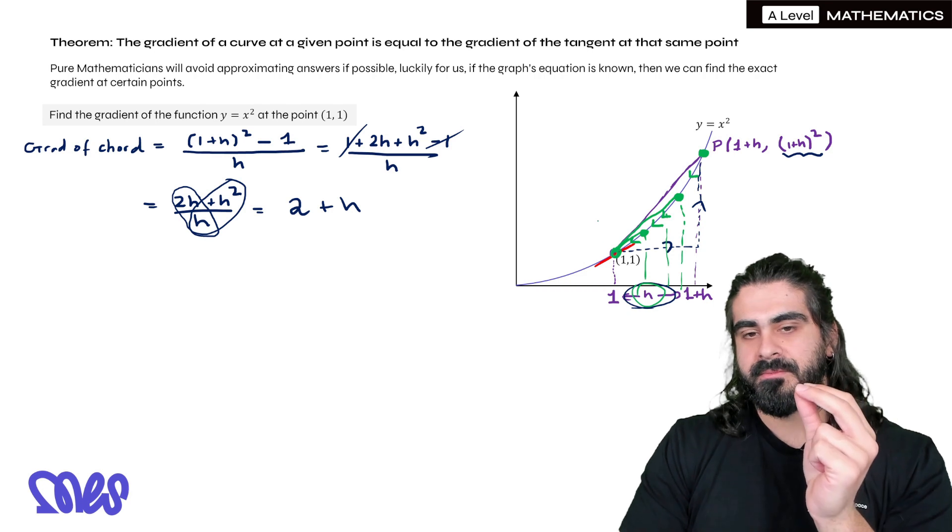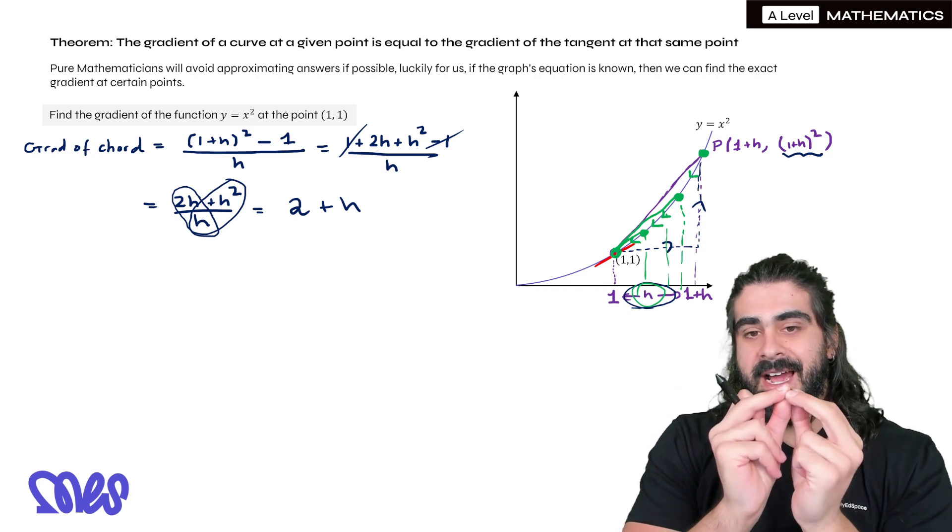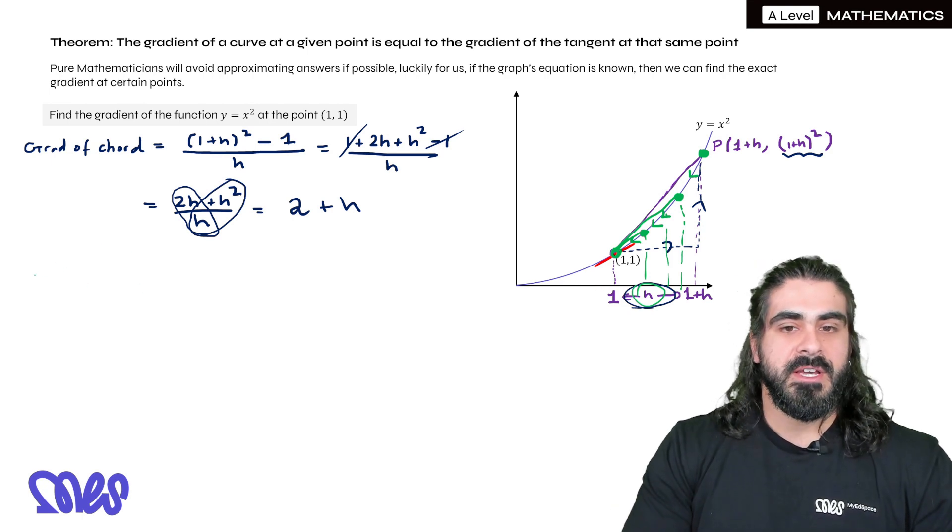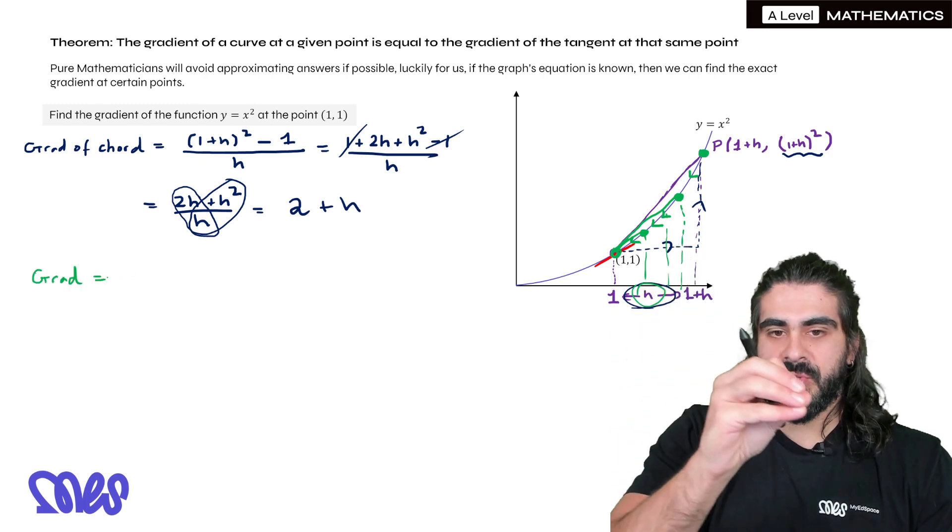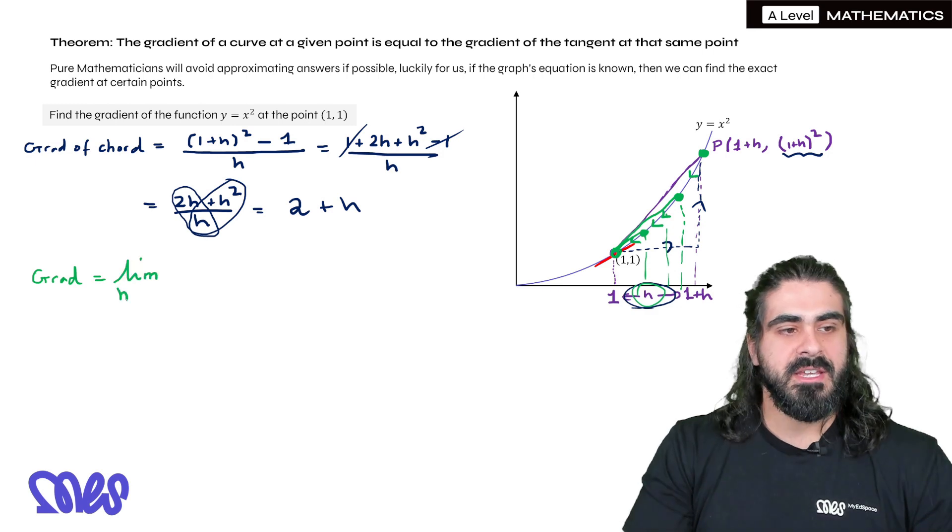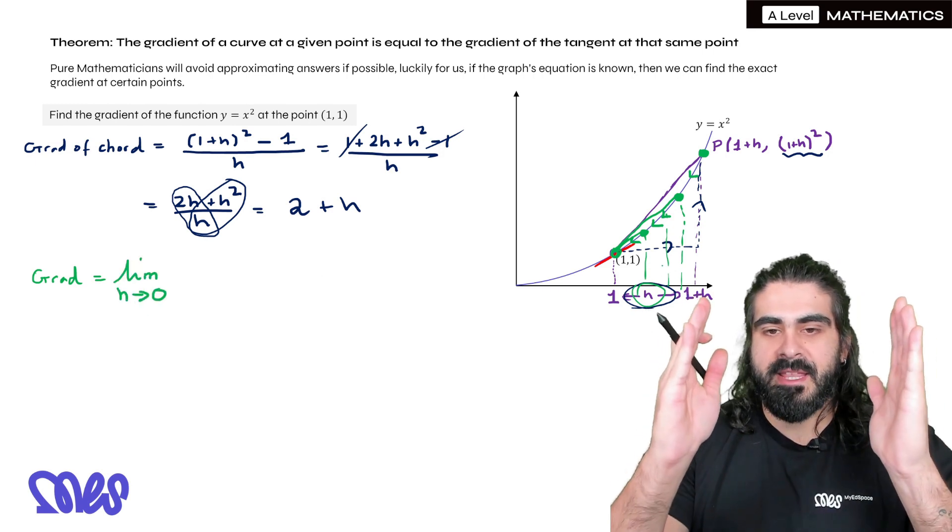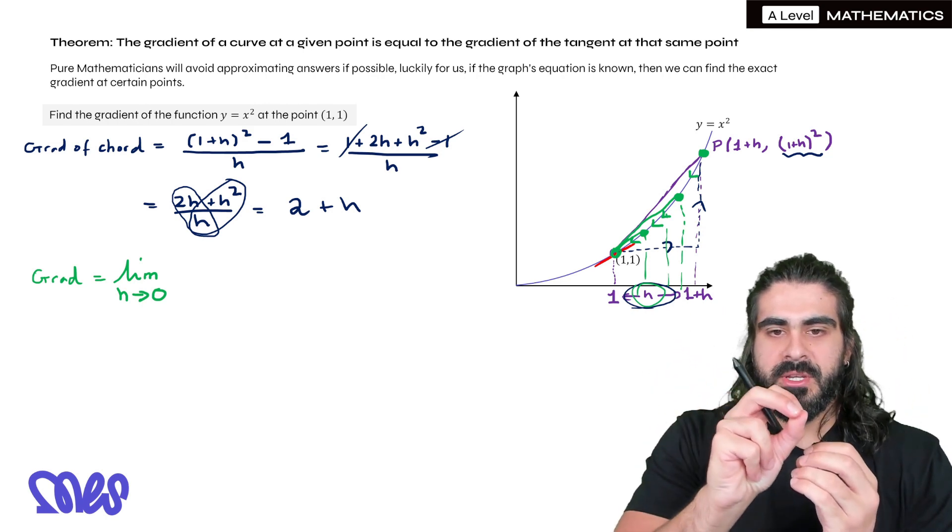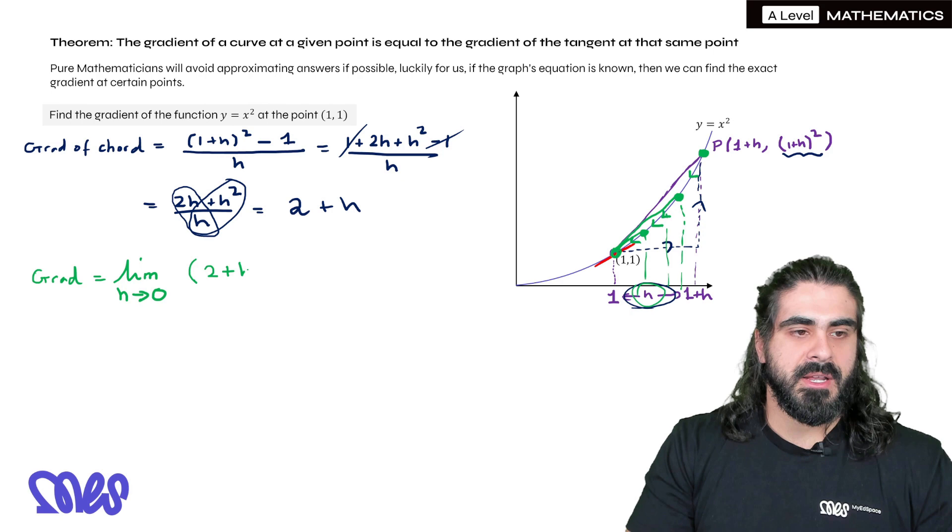So this is where we get to the point where we think theoretically, what does the h value have to be so that we're at the point? When we're at that point, the two points meet, and there you get the accurate gradient of the red line. So this is where the notation comes in. When you move a point towards something else, we call that a limit as h tends to zero. So we're making that h value smaller. By making it smaller, we're moving those points towards the point in question. So it's the limit as h tends to zero of (2 + h).